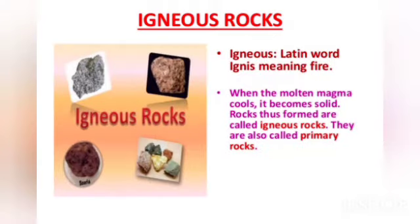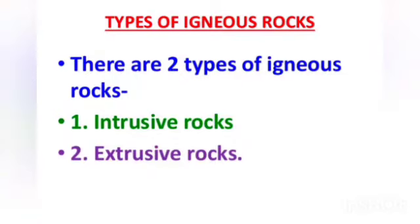Igneous rocks — the Latin word ignis means fire. When the molten magma cools, it becomes solid. Rocks thus formed are called igneous rocks. There are two types of igneous rocks: intrusive rocks and extrusive rocks.